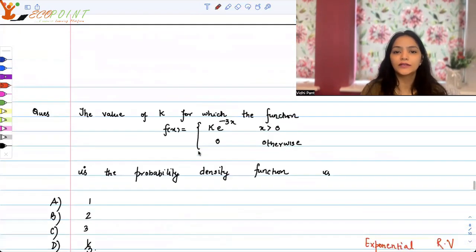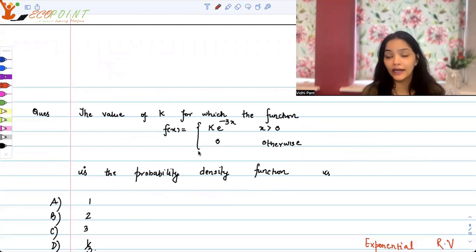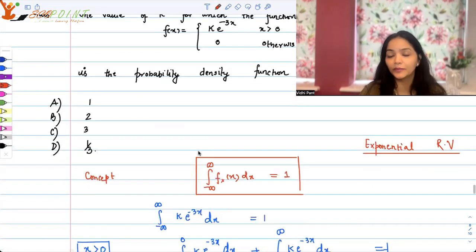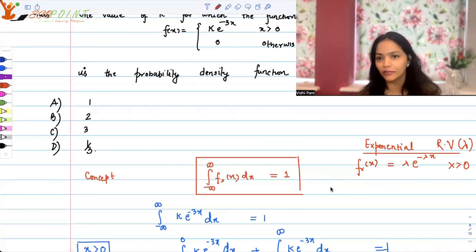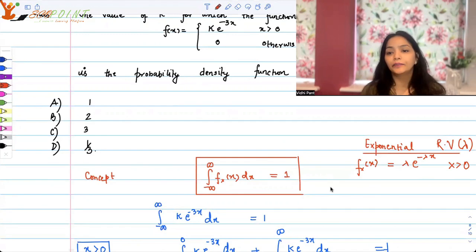When you looked at this question, if you've done this random variable before, you could realize this looks similar. The pdf for exponential random variable where the parameter is λ is λe^(-λx) where x is greater than 0. This λ is the same lambda used in the Poisson distribution, in the Poisson process. It's the rate of something happening.